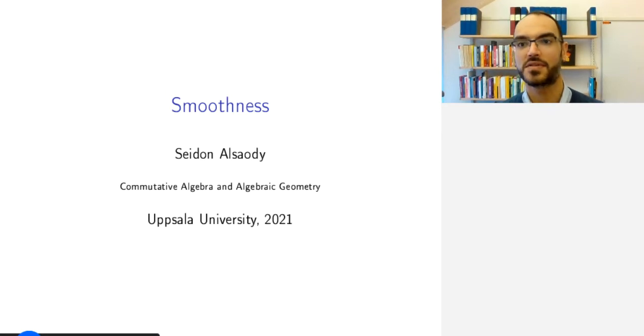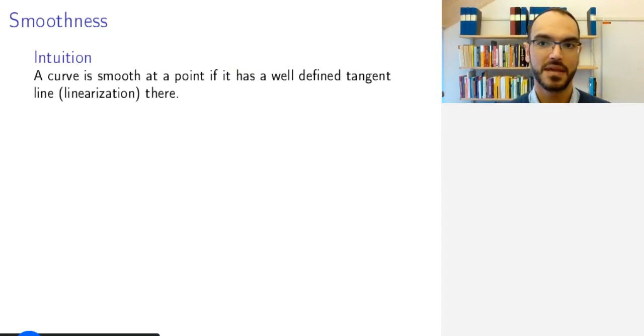You will recognize many of the constructions from earlier courses you have taken, even courses in calculus. The intuition behind smoothness is that we want to call a curve smooth at a given point if it has a well-defined tangent line at that point, a well-defined linearization.